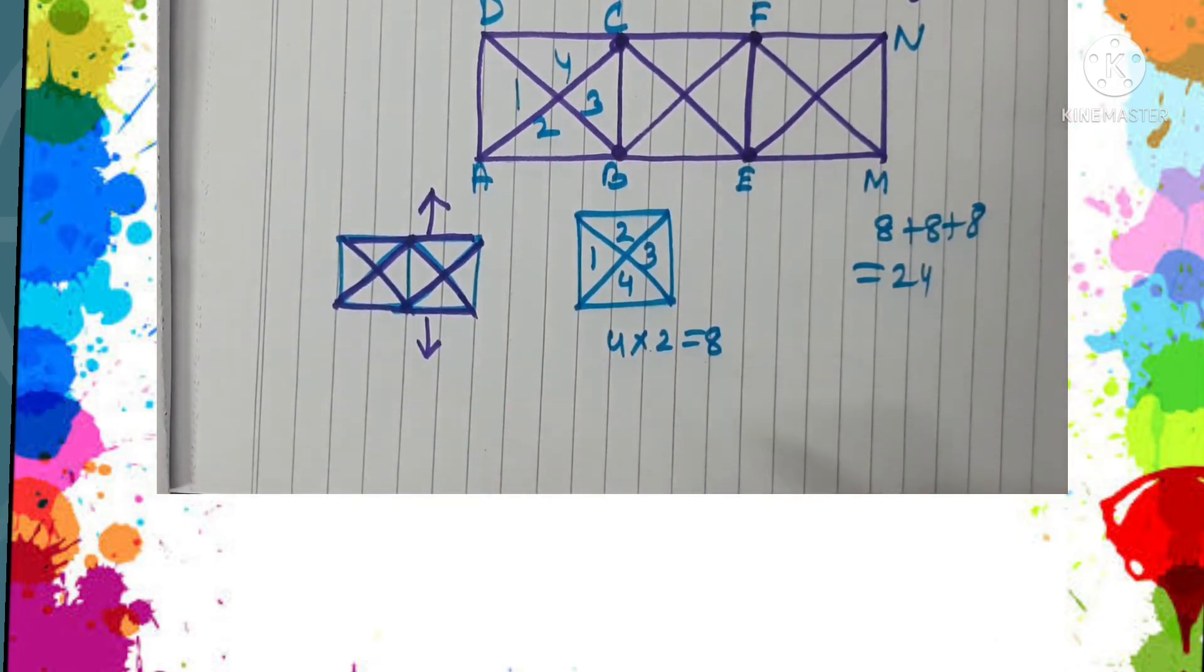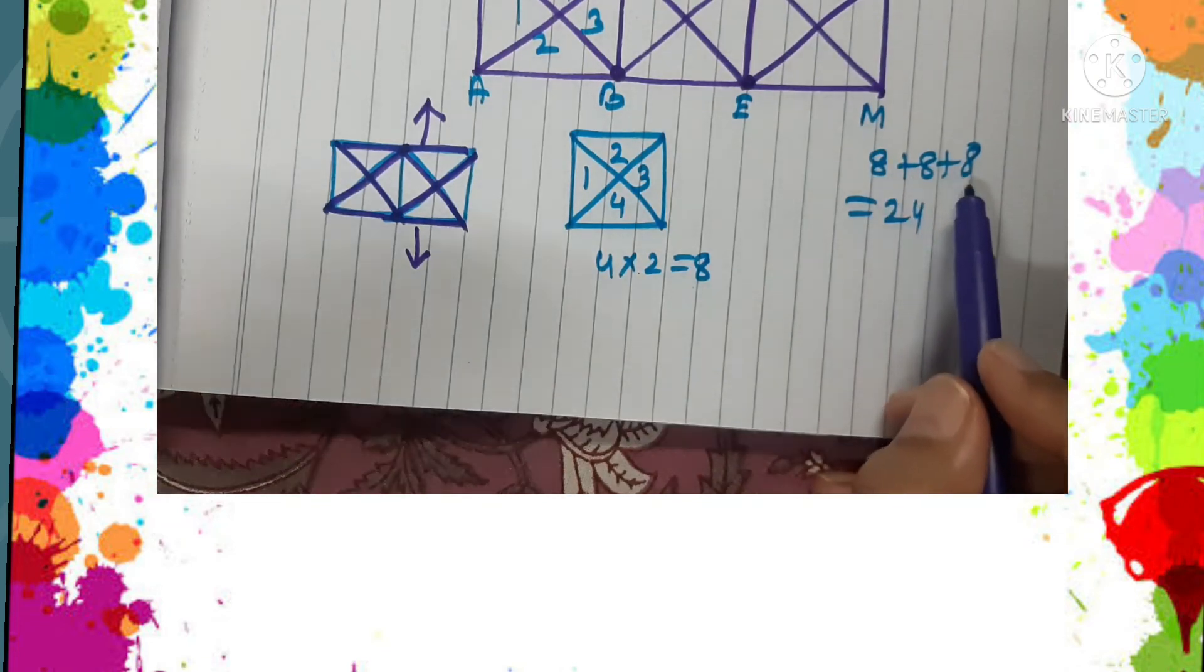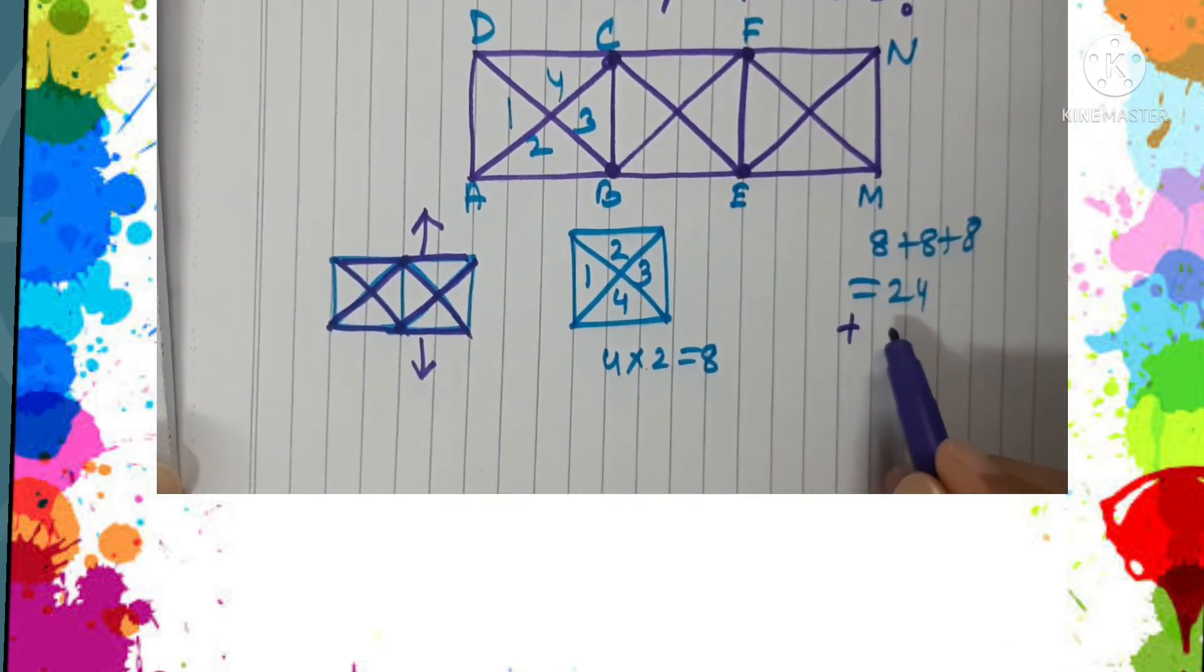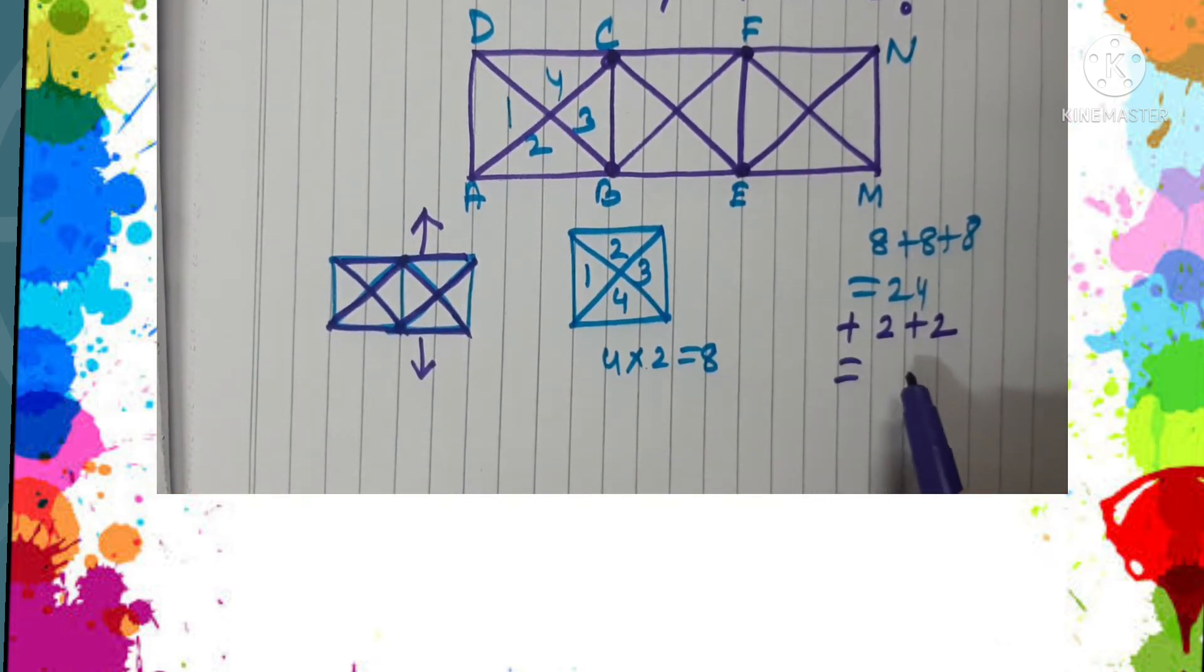So total number of triangles in this figure will be 8 plus 8 plus 8, which is 24, plus 2 plus 2, that is 24 plus 4, which is 28. So total number of triangles in this shape will be 28. Isn't it interesting?